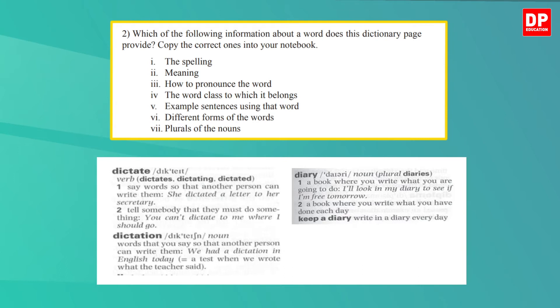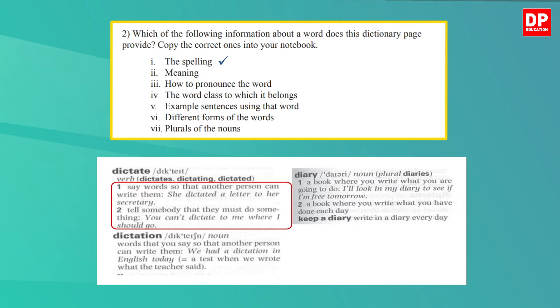Okay let's check the answers. Which of the following information about a word does a dictionary page provide? Do you find the spelling of a word in a dictionary? Yes you can find it, so you can tick the first one. What about the meaning? Of course you refer to a dictionary to find the meaning of a word, and most of the time there's more than one meaning — all those meanings are numbered as one, two, etc. You can see two meanings here for the word 'dictate,' given as one and two. So let's tick that one too.